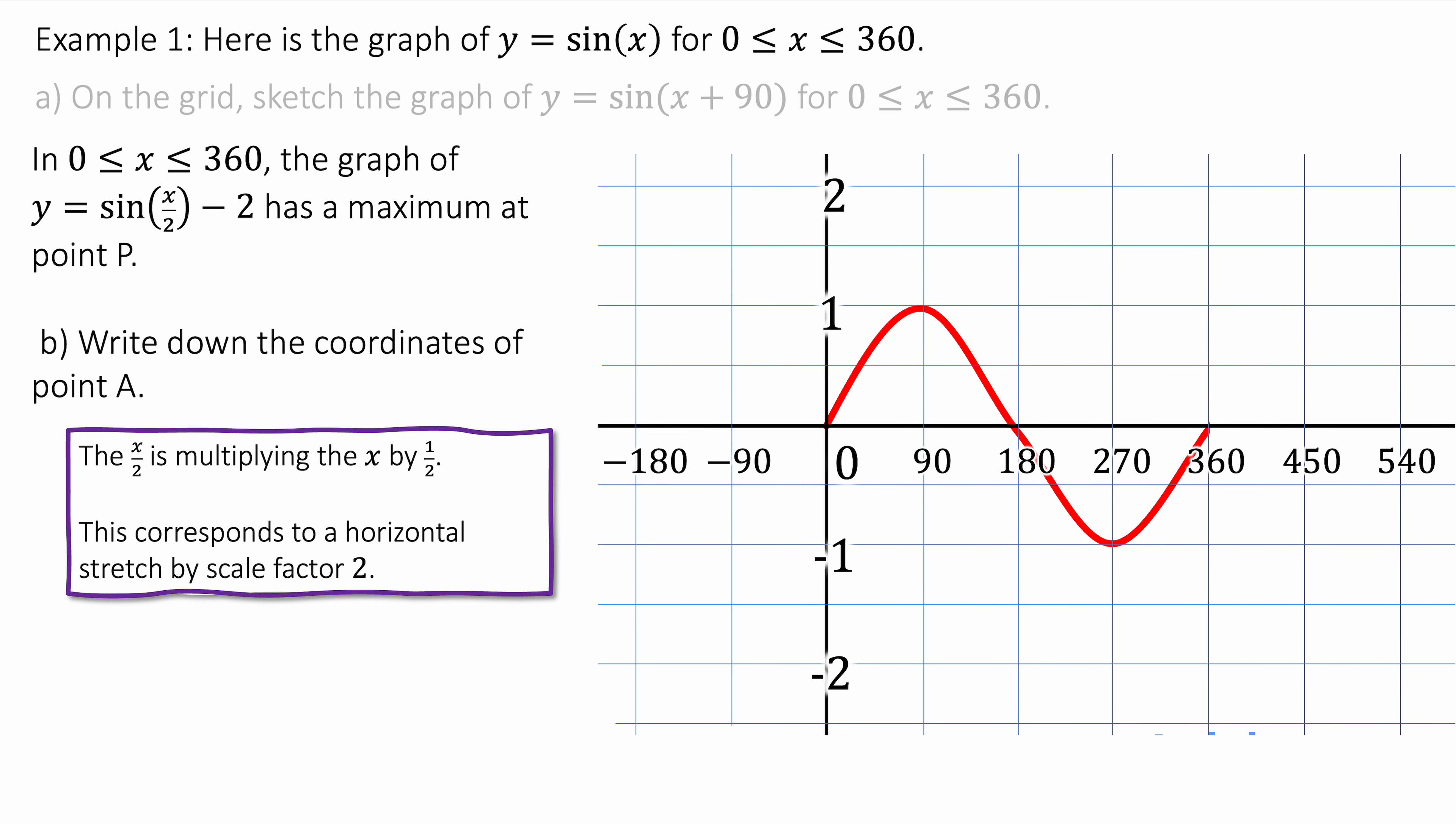Now part b it says between 0 is less than 360. The graph y equals sin of x over 2 minus 2 has a maximum of point p. Write down the coordinates of point p. Well here the x is being multiplied by a half.